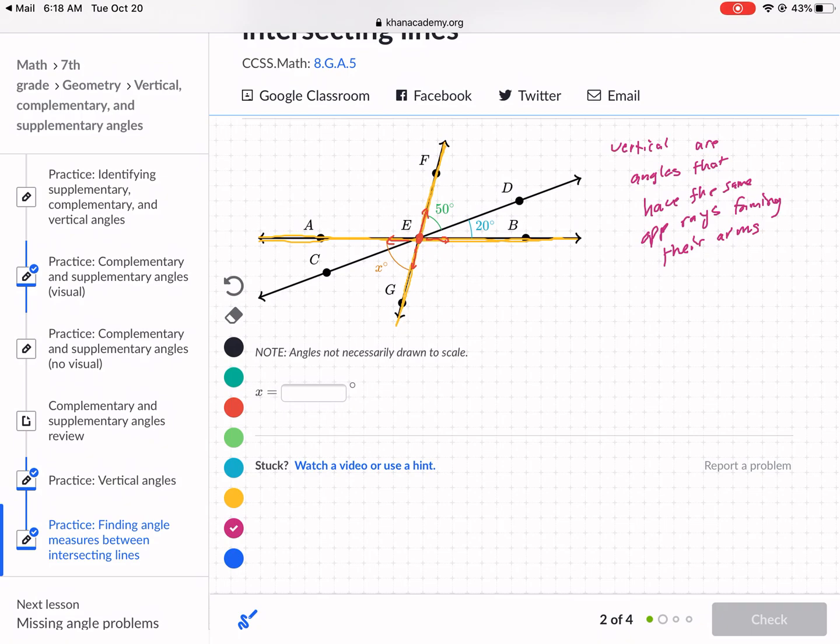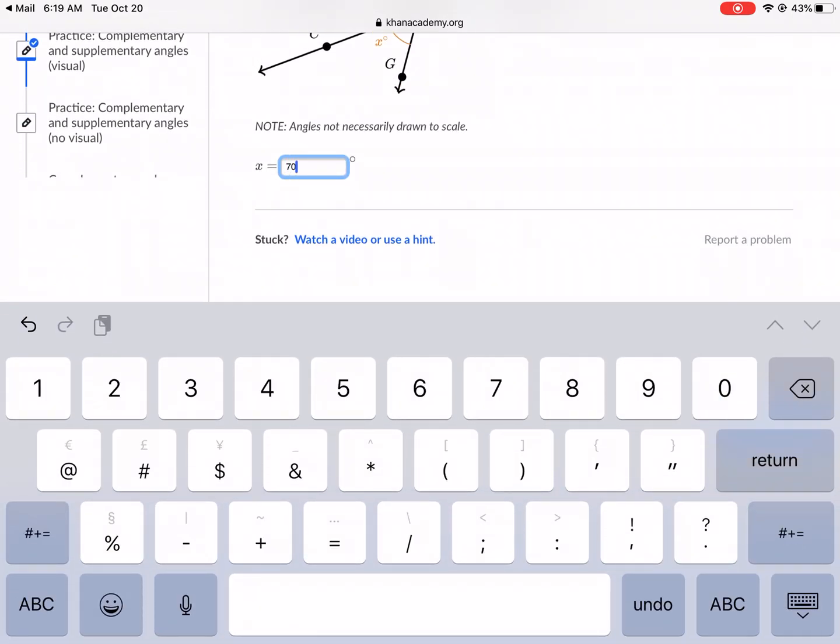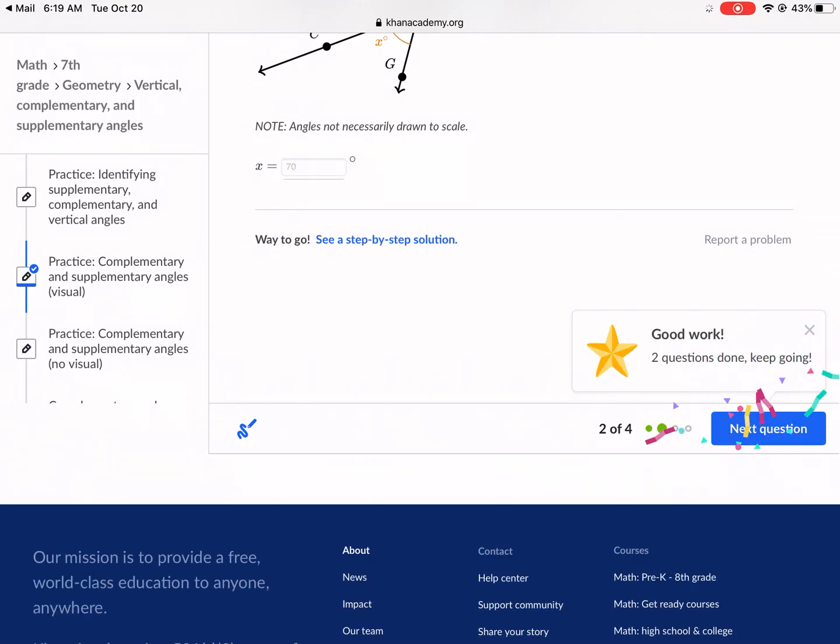Now look at 50 and 20. You can see that they are formed by the same opposite rays. So vertical angles are angles that have the same opposite rays forming their arms. So now we have 50 and 20. That whole side is 70. The rule for vertical angles formed by opposite rays are that they are equal to each other. So x is going to be equal to 70 because they are vertical angles. So we're going to write in 70 for x.